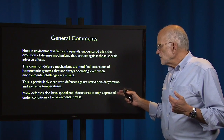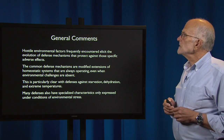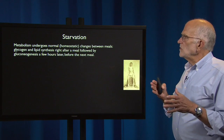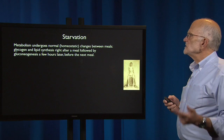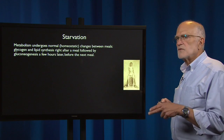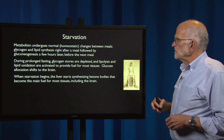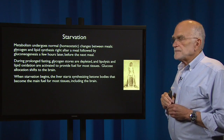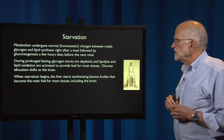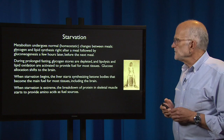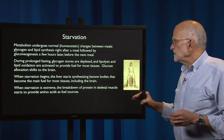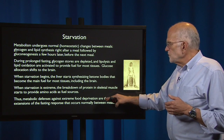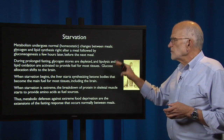Many defenses also have specialized characteristics that are only expressed under conditions of environmental stress. First, starvation. Our metabolism undergoes quite normal homeostatic changes between meals. Glycogen and lipid synthesis right after a meal are followed by gluconeogenesis a few hours later before the next meal. During prolonged fasting, glycogen stores are depleted and lipolysis and lipid oxidation are activated to provide fuel. Glucose allocation shifts to the brain. When starvation begins, the liver starts synthesizing ketone bodies that become the main fuel for most tissues, including the brain. And when starvation is extreme, the breakdown of protein and skeletal muscle starts to provide amino acids as fuel sources. That means that metabolic defenses against extreme food deprivation are extensions of the fasting response that occurs normally between meals.